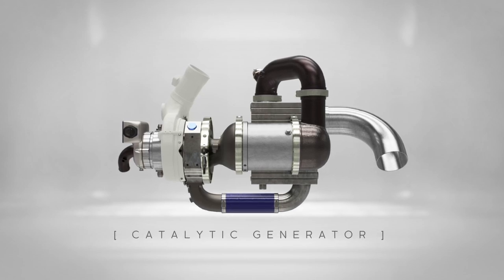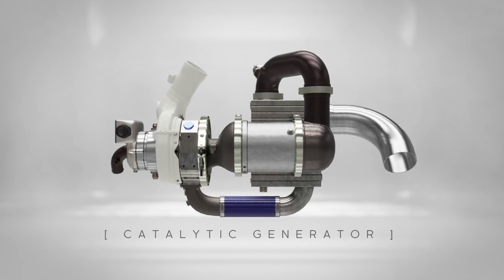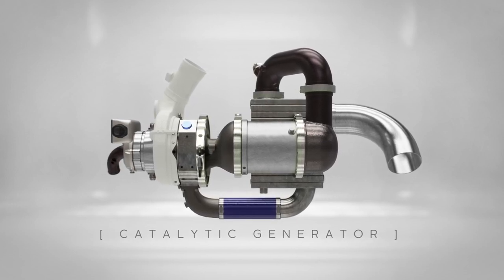The Delta Cosworth Catalytic Generator, or CATGEN, is a zero emission capable, lightweight and compact generator, enabling electrification for a multitude of sectors.